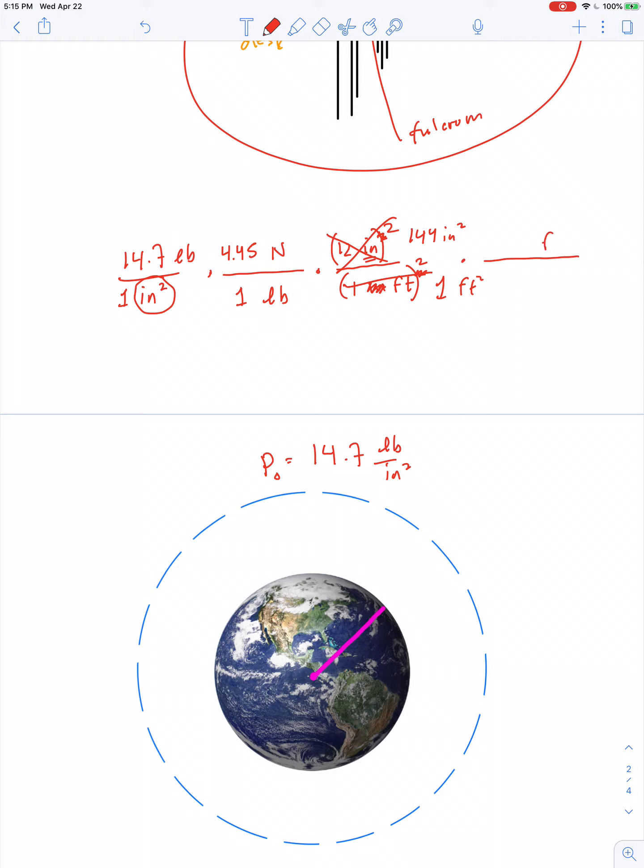And I know how many feet are in a meter - there's about 3.28 feet in every 1 meter. But again, I'm going to have to square that conversion factor because I'm trying to cancel out square feet. So grab your calculator, work all this out, see what you get.